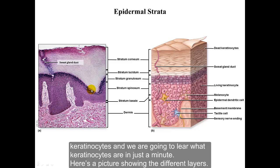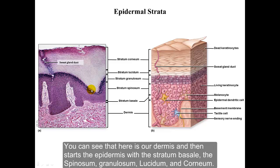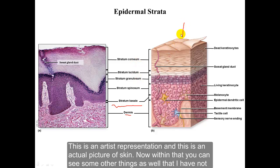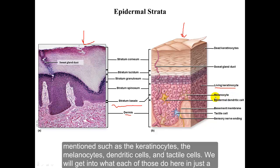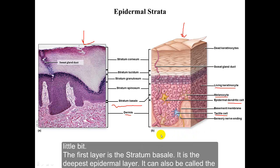Here is a picture showing the different layers. You can see the dermis, and then the epidermis starts with the basale, spinosum, granulosum, lucidum, and corneum — shown both as an artist's representation and as an actual picture of skin. Within those layers you can also see other cell types: keratinocytes, melanocytes, dendritic cells, and tactile cells, which we will cover shortly.